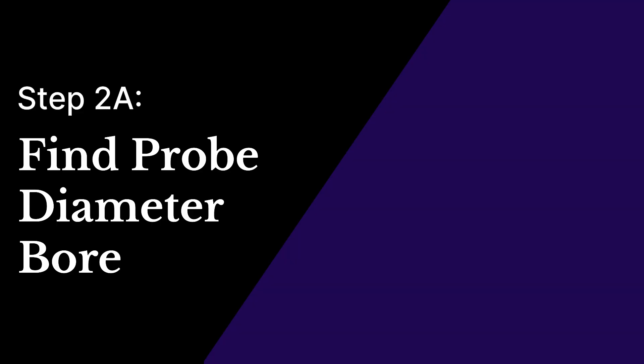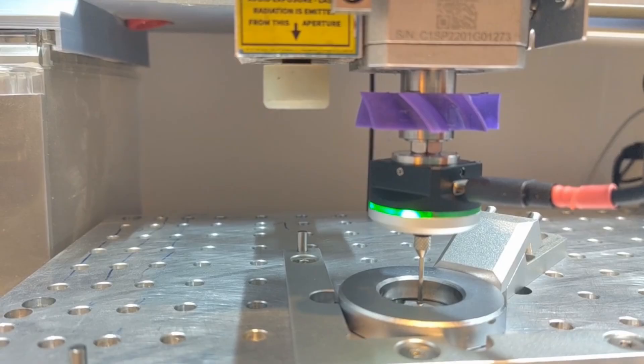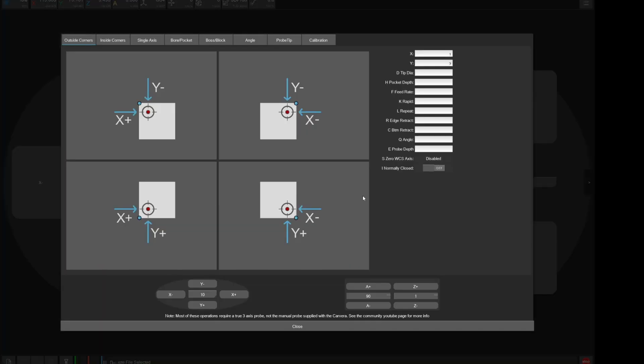The first method of calibrating the probe tip diameter will be with a bore of known dimensions, like my ring gauge. Ball bearing bores are also very good for this process, as they are usually very accurate and circular. Start with the probe located in the center of the bore at the height you wish to probe. You can use the probe bore command in the probing dialog to find the center.